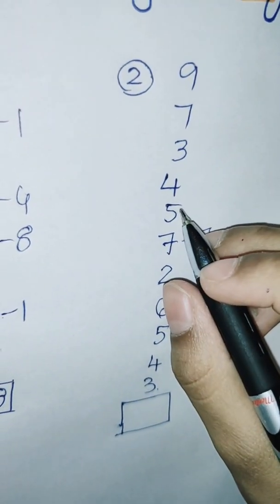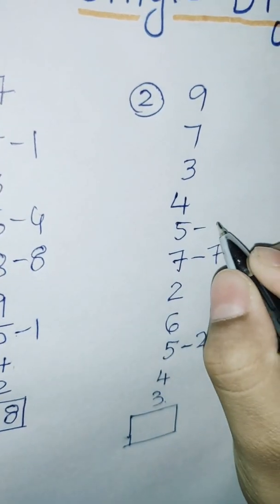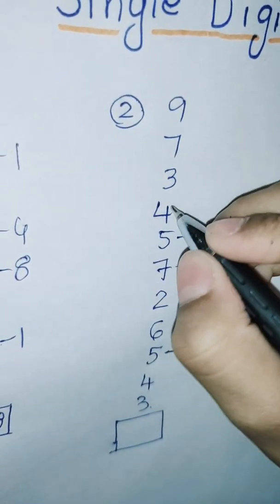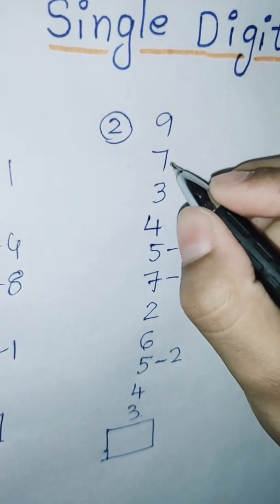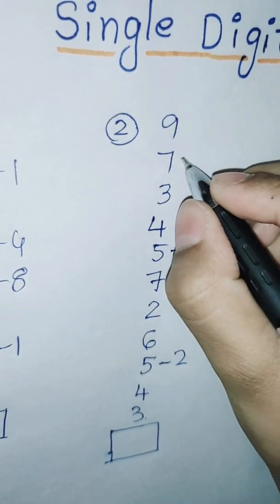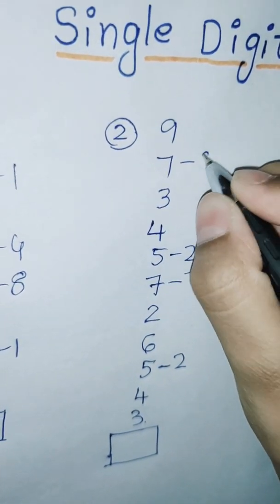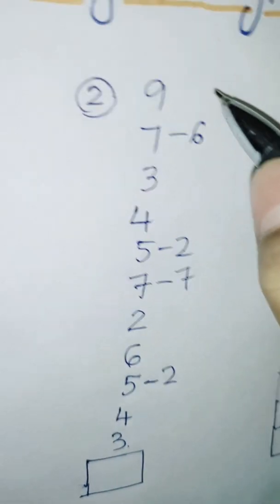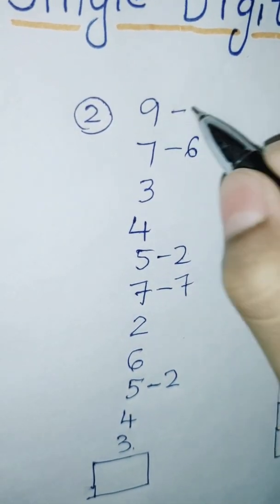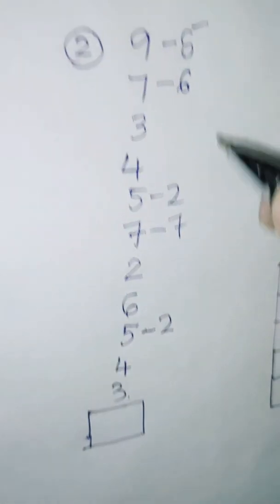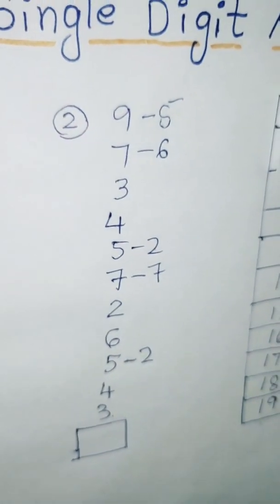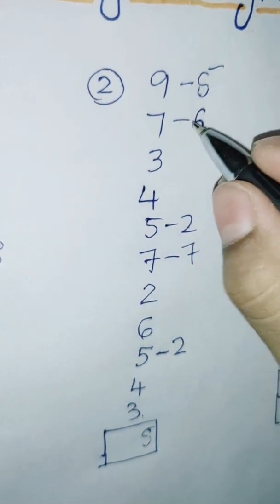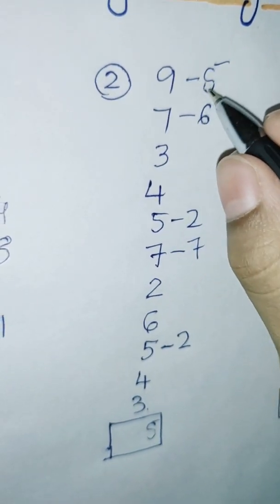7 plus 5 equals 12. 12, it is 2. 2 plus 4 equals 6. 6 plus 3 equals 9. 9 plus 7 equals 16. 16, it is 6. 6 plus 9 equals 15. 15, it is 5. The last count is 5. I am writing 5. And count the dashes: 1, 2, 3, 4, 5. The dashes is 5. We want to write 5.